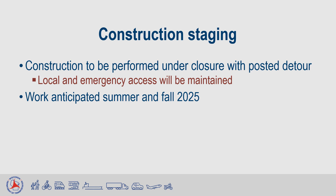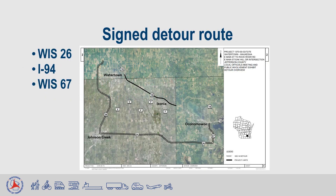Construction is anticipated in summer and fall of 2025. Construction will be performed under a road closure with posted detour. Provisions will be included in the contract stipulating the contractor has to maintain local and emergency access at all times. The posted detour, as depicted on this slide, will follow along Wisconsin 26, I-94, and Wisconsin 67.